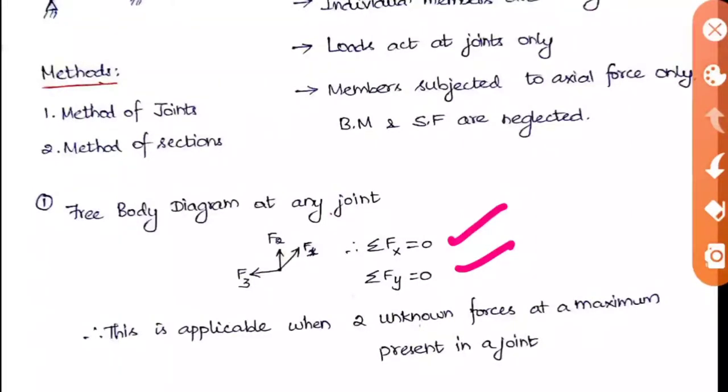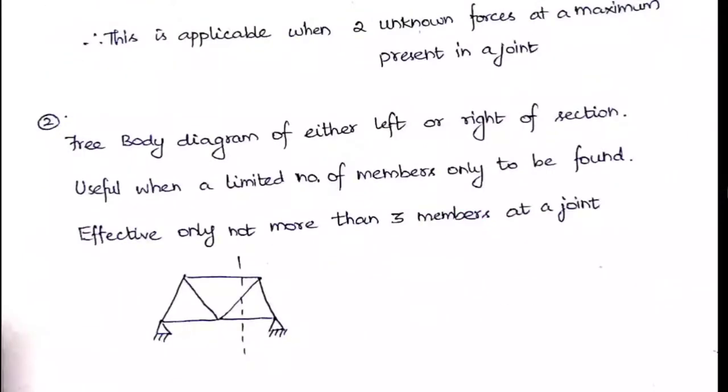The next is the method of sections. When we go for this method, it's when we have a very large structure and they are asking the answer for any one member alone. If that is the case, you should not do method of joints because it will be very time consuming.